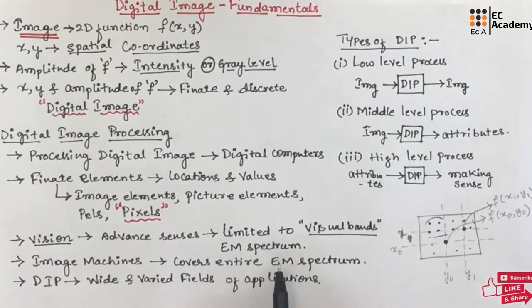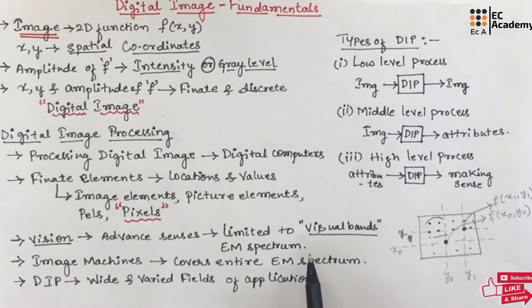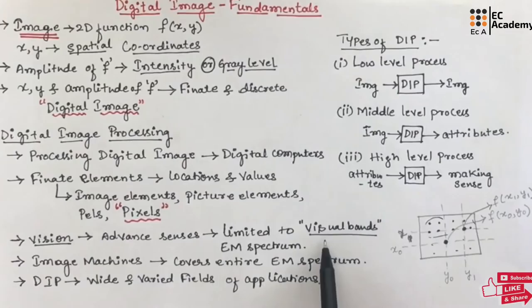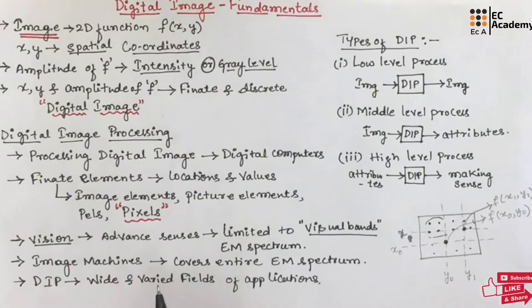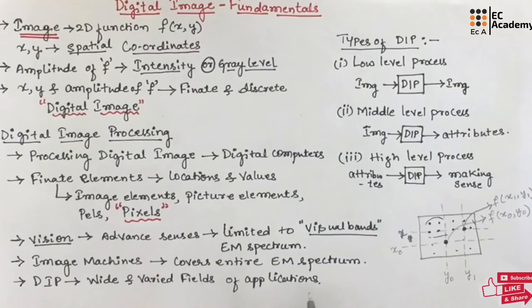If we consider the electromagnetic spectrum, we have different sources of energy like gamma rays, x-rays, ultraviolet rays, visible band, IR, microwaves, and radio waves. Within these bands, we can visualize an image only in the visible band. To overcome this disadvantage, we can use image machines, which are used for image processing. This covers the entire bands of the electromagnetic spectrum from gamma rays to radio waves. Hence, digital image processing covers a wide and varied field of applications since image machines cover the entire electromagnetic spectrum.